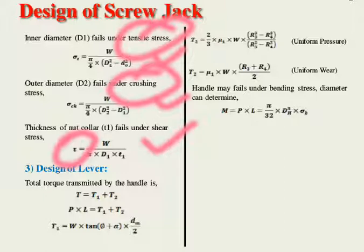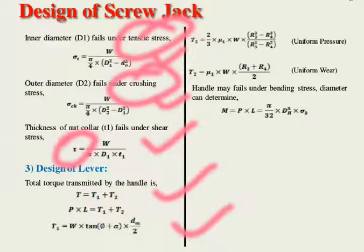For the design of the lever: the total torque transmitted by the handle is T = T1 + T2. T is calculated as P × l (load times lever length). T1 = W × tan(φ + α) × dm/2, and T2 is calculated using either uniform pressure theory or uniform wear theory, as covered in previous sections. The handle may fail under bending stress; its diameter dh is found from: M = P × l = (π/32) × dh³ × σb.